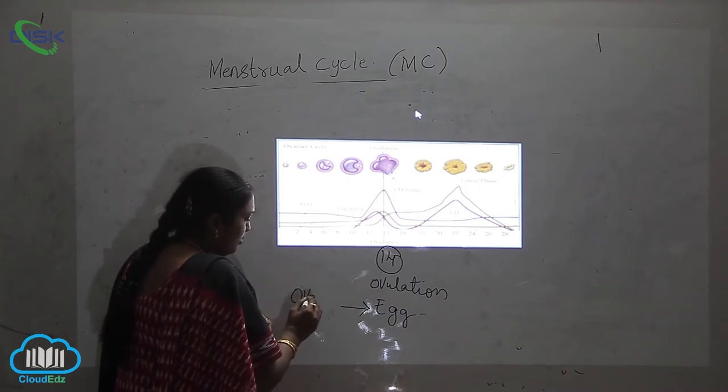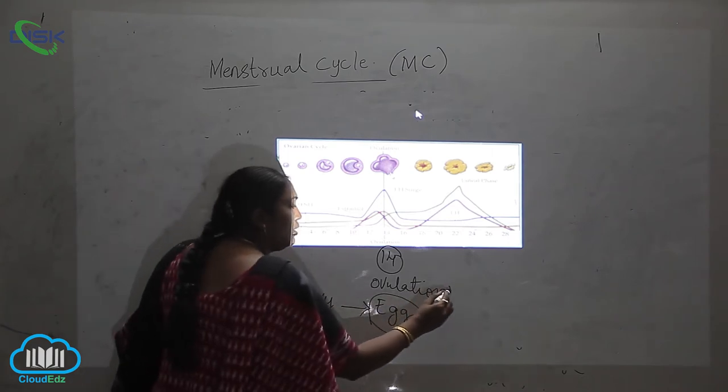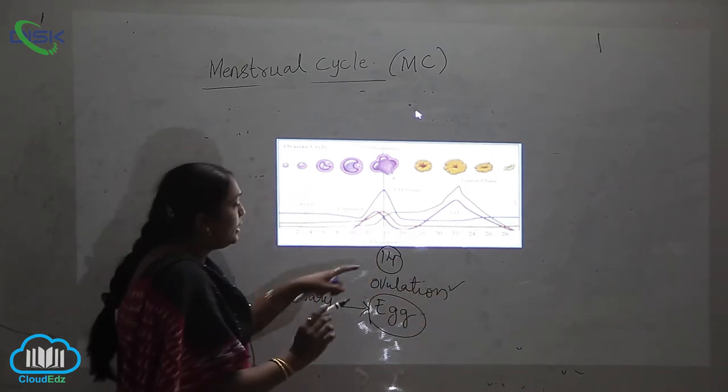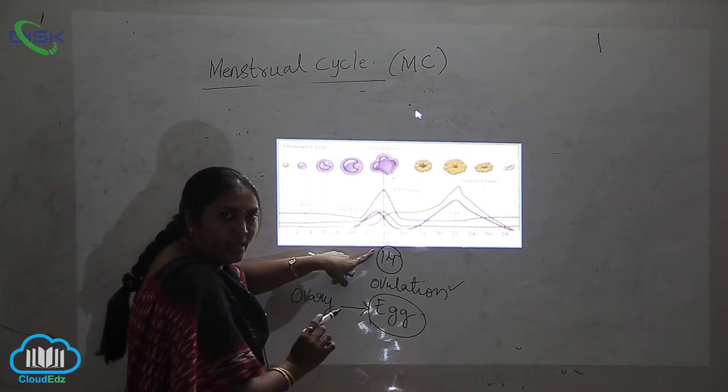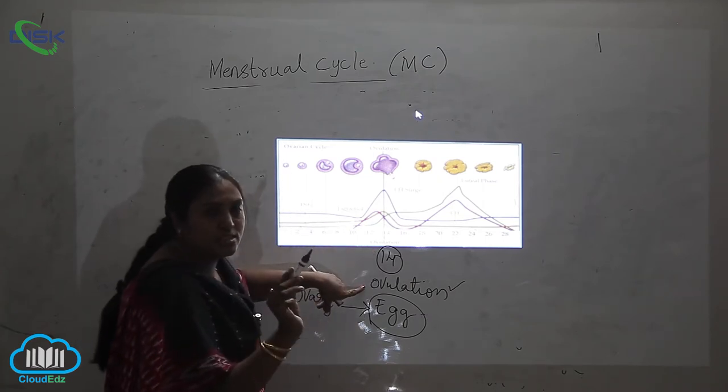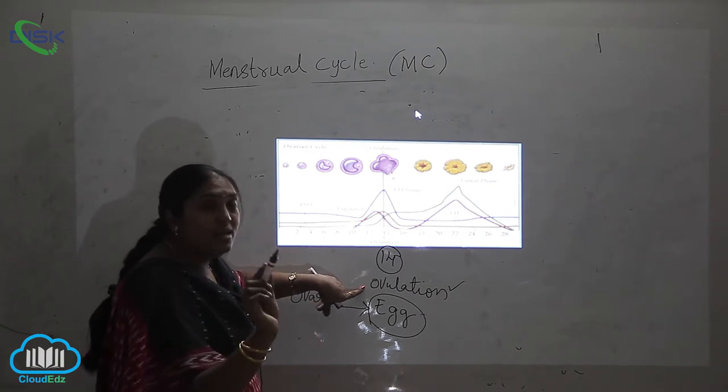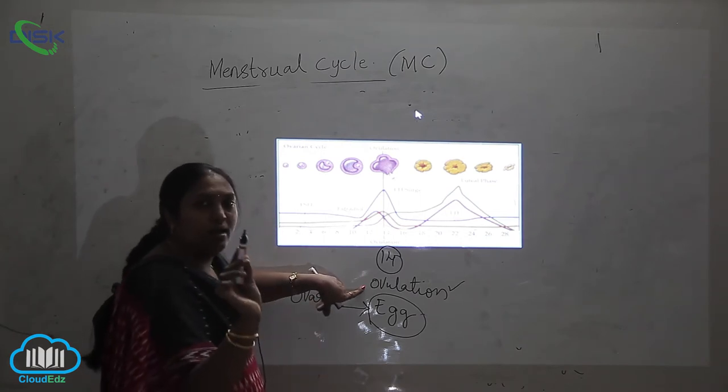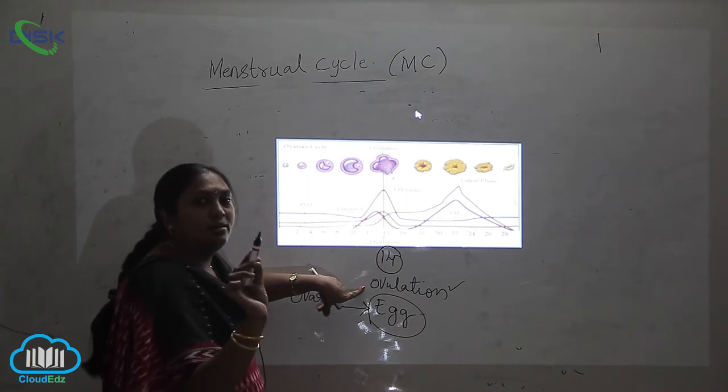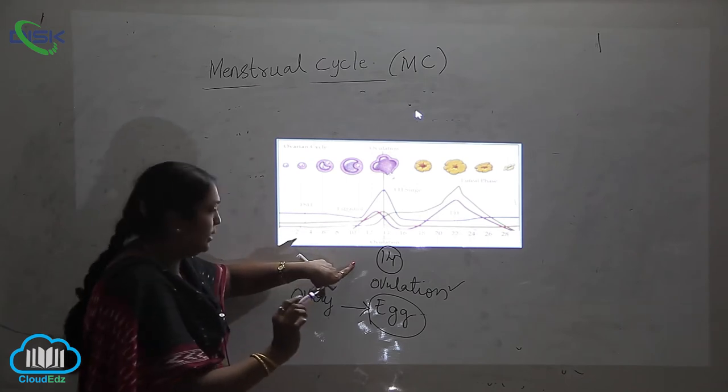So release of egg from the ovary is called ovulation when it is occurring on the 14th day. This process is called ovulation when the females are healthy and they have no other exceptional conditions. This will definitely occur.